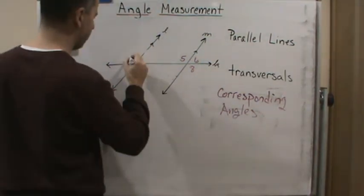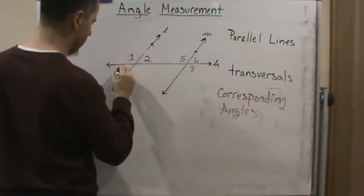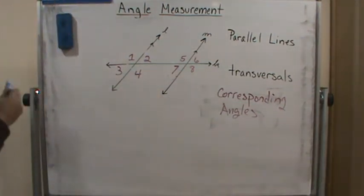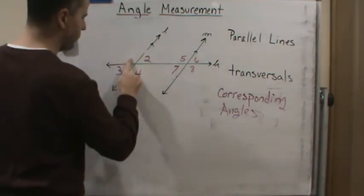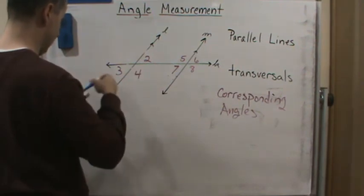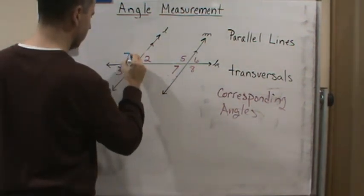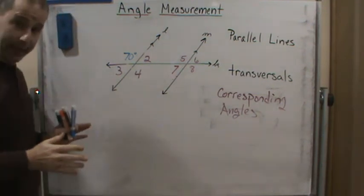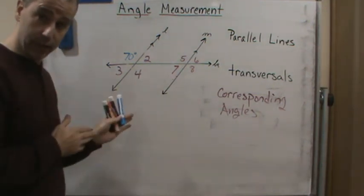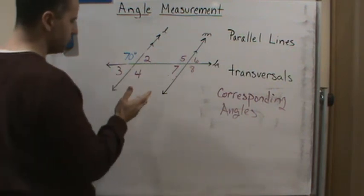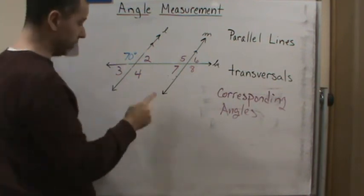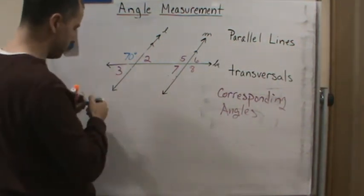Let me write these back up — angles 1, 2, 3, 4, 5, 6, 7, and 8. Now let's say angle 1 is 70 degrees. Can we figure out the rest of these? Absolutely. There are lots of things we could do, and there are multiple ways of getting all these answers.